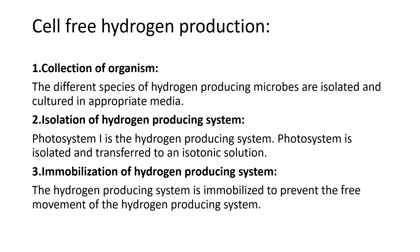First the organism is prepared, then the photosystem is isolated and transferred to an isotonic solution. This stabilizes the structure of proteins in the photosystem. The organisms are then immobilized to prevent free movement, using materials like glass paper and gels.